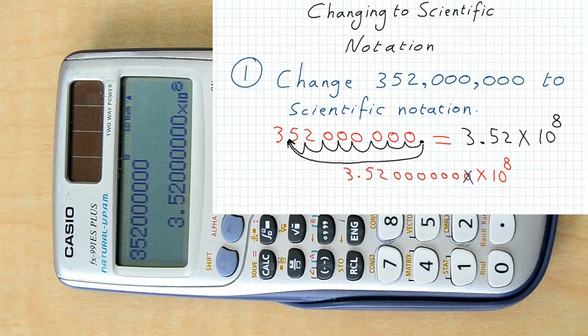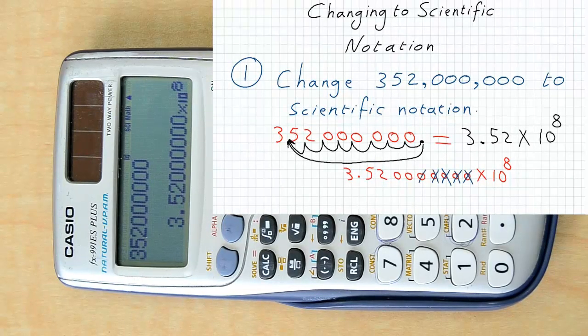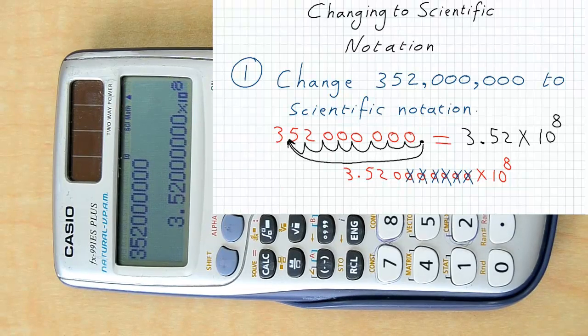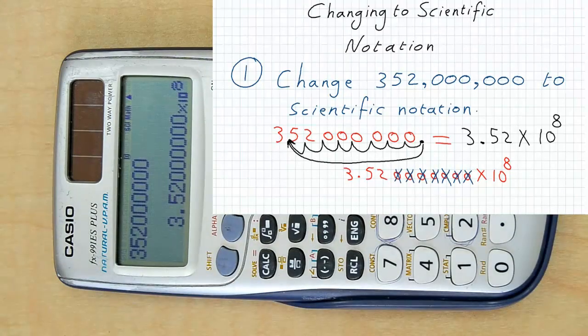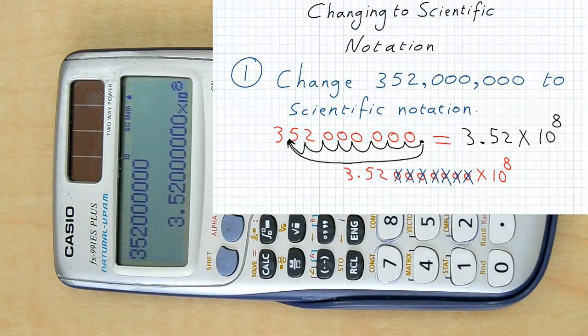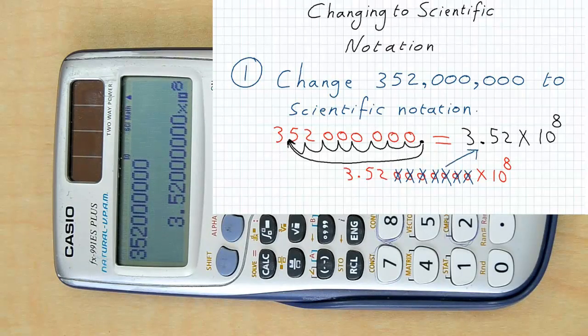You can ignore these zeros which came because we chose number 9, so we must have 9 digits in our answer. Your answer is going to be the same as what we have got over here.